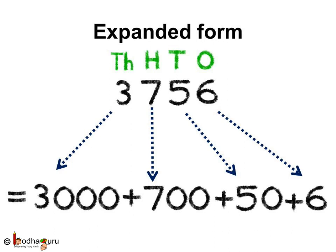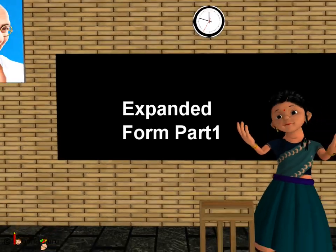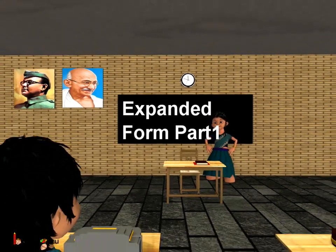So, now you know how to write any number up to 4 digits in expanded form. That's all for now. Bye-bye children.